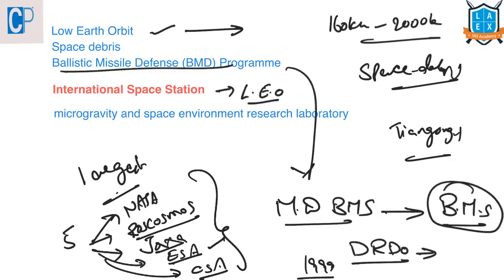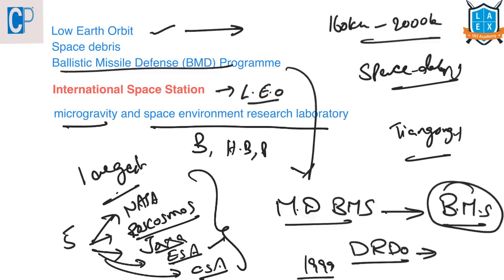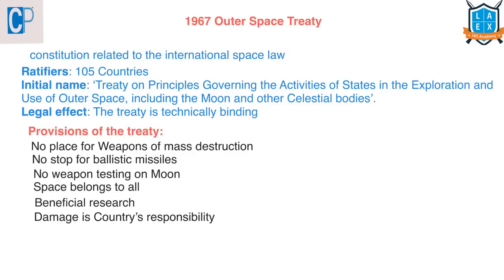The International Space Station serves as a microgravity and space environment research laboratory where the crew members can conduct experiments in biology, human biology, physics, astronomy, meteorology, and other fields.